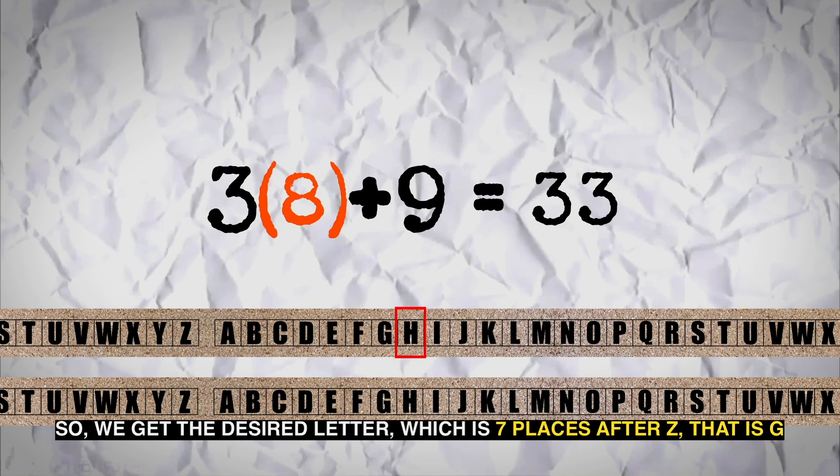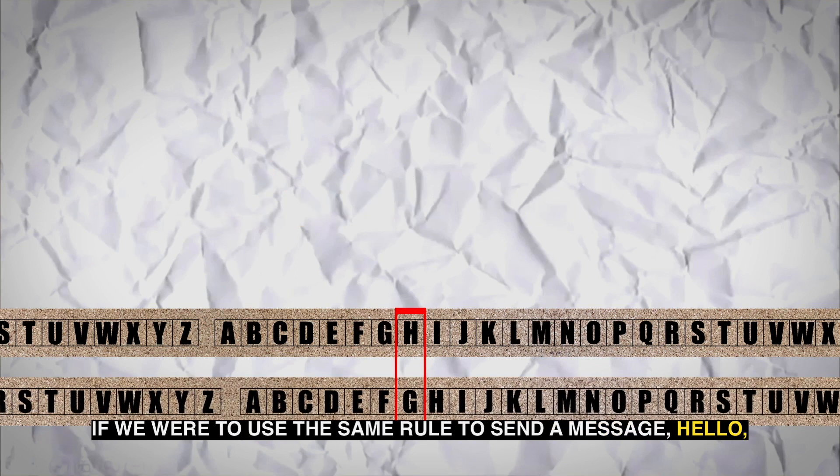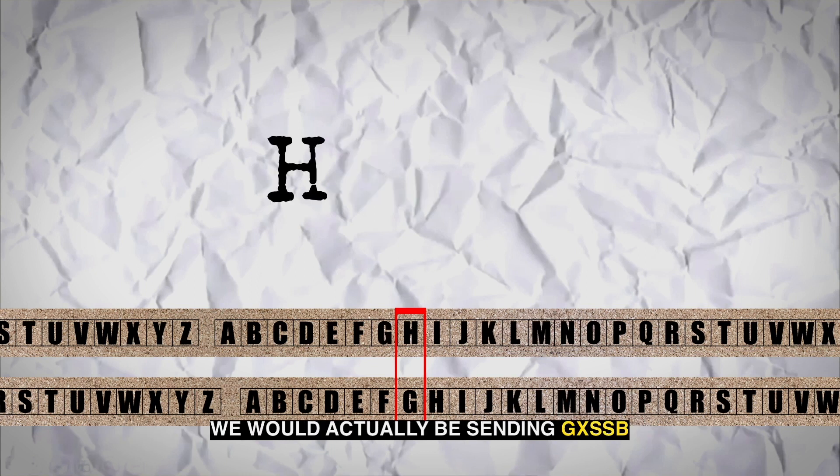So we get the desired letter which is 7 places after z, that is g. If we were to use the same rule to send a message hello, we'd actually be sending gxssb.